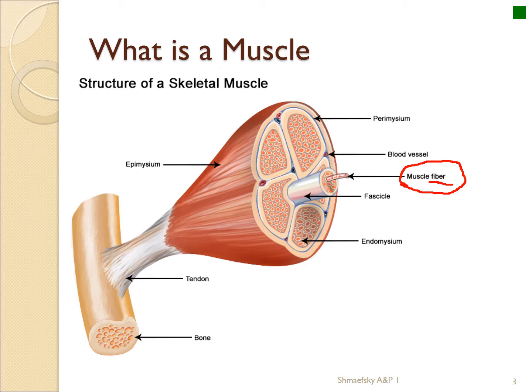You can see similar terminology used with the nervous system. The muscle organ is actually very similar in structure to a nerve. When we look at a muscle from the outside in, the first thing you see is a connective tissue covering called the epimysium.